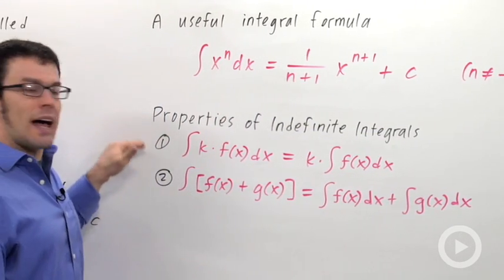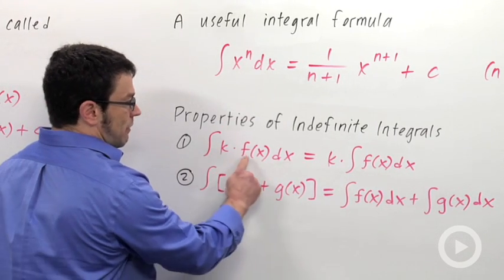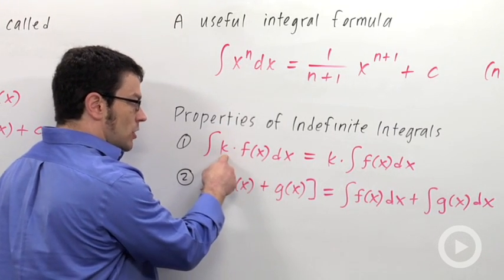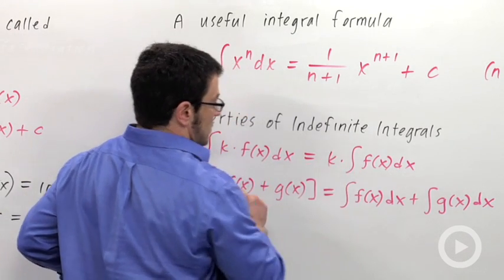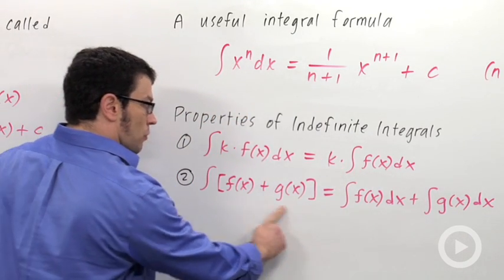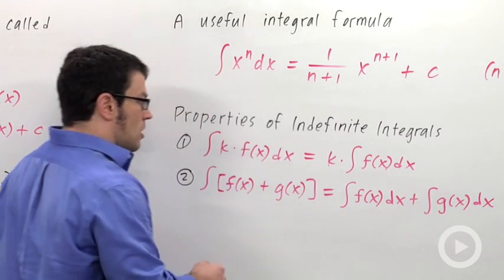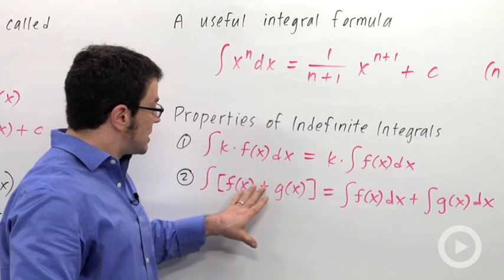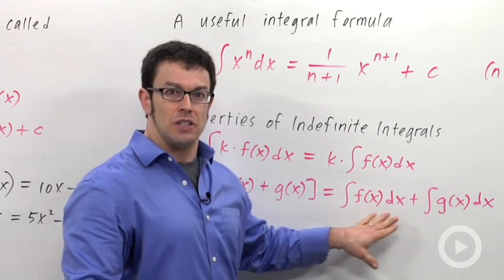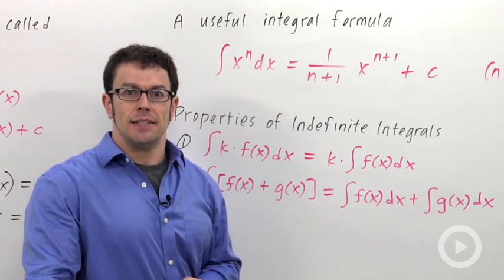There are two properties that we'll use a lot. First, the constant multiple rule: if you're integrating a function that has a constant in front of it, you can pull that constant out of the integral. The other one is the sum rule. The integral of a sum is the sum of the integrals. So if you have a sum or difference, you can separate the integral over the sum, which is also very useful. We'll use these two properties and this formula in upcoming lessons.